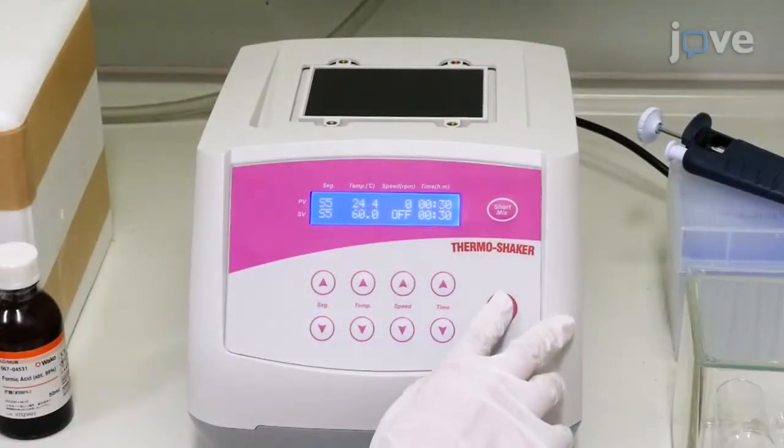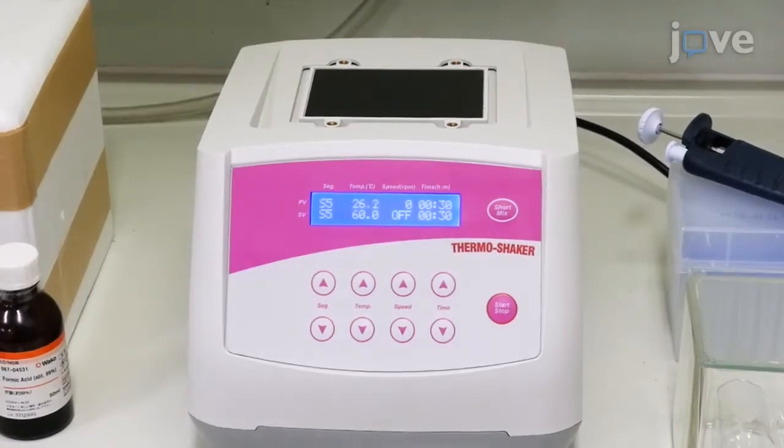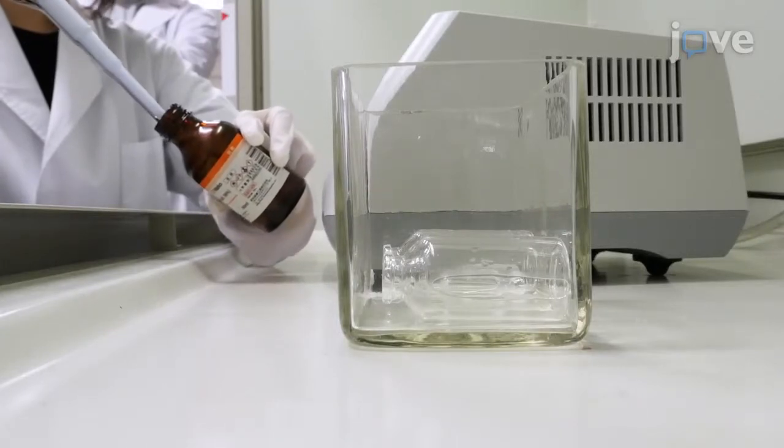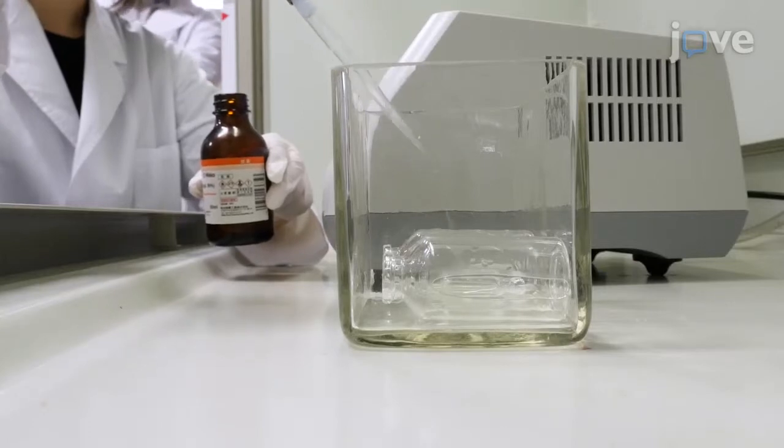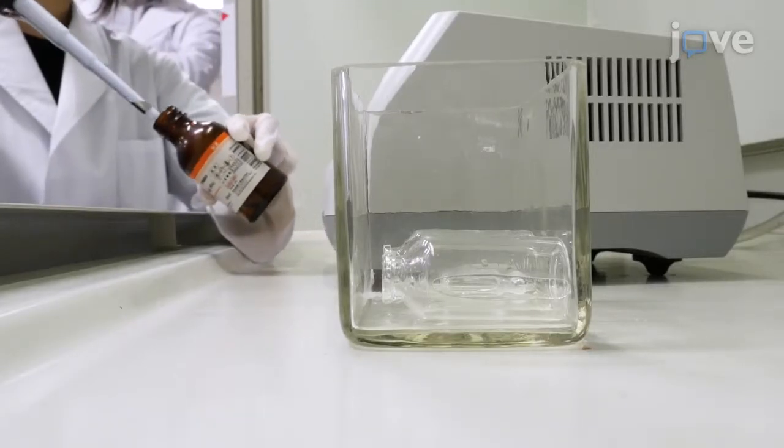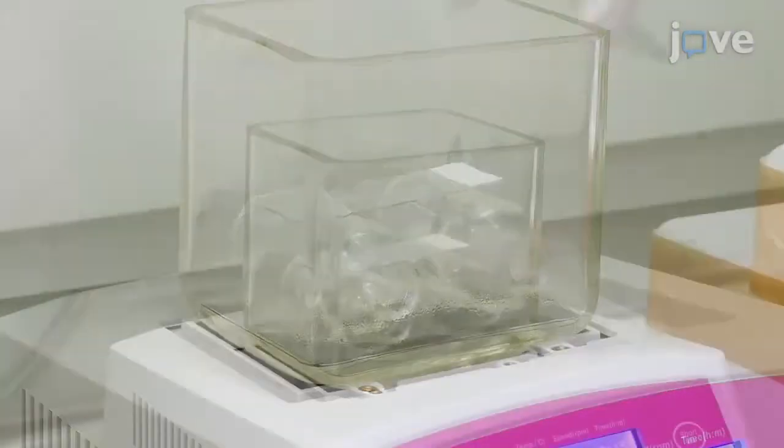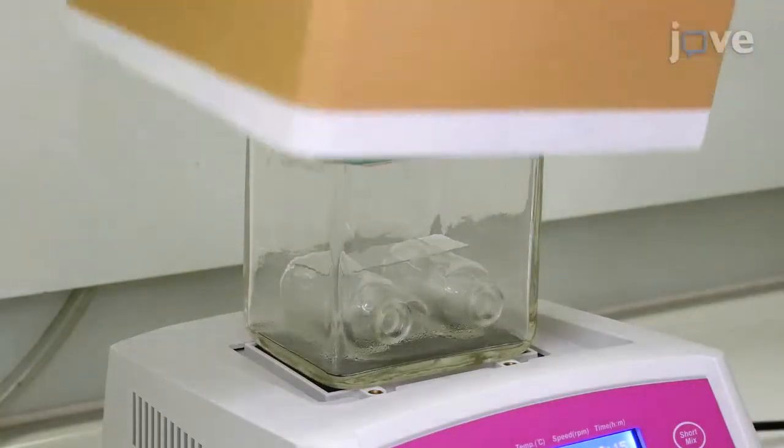Treat the tissue sections with formic acid vapor for better ionization of the amyloid beta proteins from autopsy brain tissue. To do so, prepare the oven at 60 degrees Celsius and an incubation glass dish with 5 milliliters of 100% formic acid. Keep the air humidity in the incubation glass dish at saturation level. Place the tissue slides in the incubation glass dish while avoiding submersion in the formic acid and treat for 6 minutes.